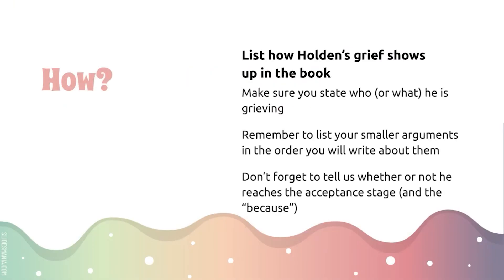List the ways in which Holden shows his grief. You could organize chronologically, list major actions and analyze them with the stages of grief, or go over the stages of grief he exhibits most and give examples. Either way, list them in the order you'll write about them. Save the acceptance stage for last — you'll have a sentence saying whether or not Holden reaches acceptance, and include that 'because' phrase explaining why: either he has reached the acceptance phase because he does this, or he hasn't because he does or does not do this.